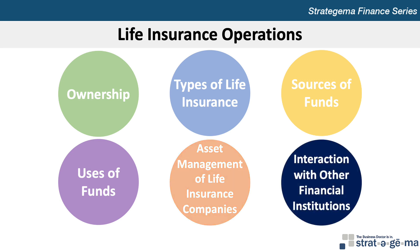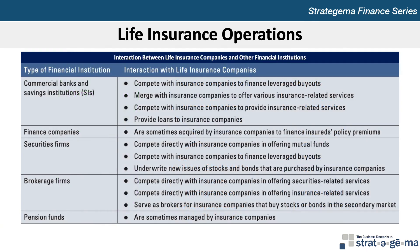Life insurance companies interact with financial institutions in several ways, as summarized in this exhibit. Those life insurance companies that have merged with brokerage firms offer a wide variety of securities-related services, including offering mutual funds to investors. Life insurance companies frequently participate in stock, bond, and mortgage markets because their asset portfolios are concentrated in these securities. They also use the money markets to purchase short-term securities for liquidity purposes.